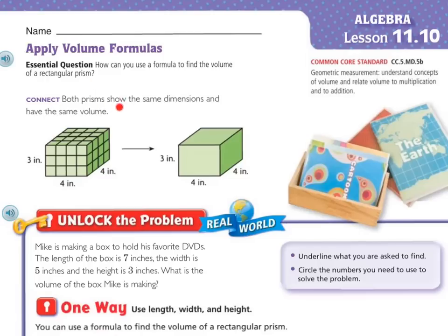Let's connect. Both prisms show the same dimensions and have the same volume. So there's this one and this one. So we have 3 inches tall, 4 inches wide, and 4 inches deep. So you can see 3 inches, 4 inches, and 4 inches.